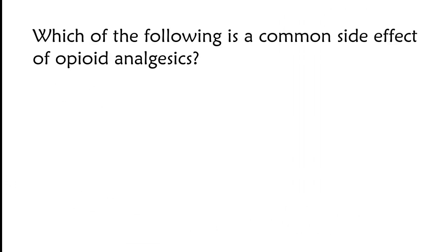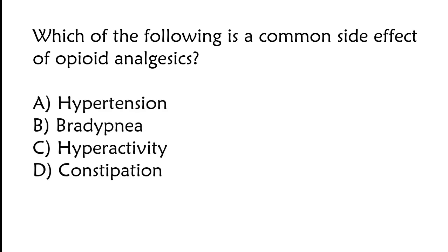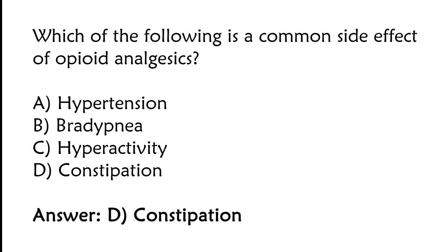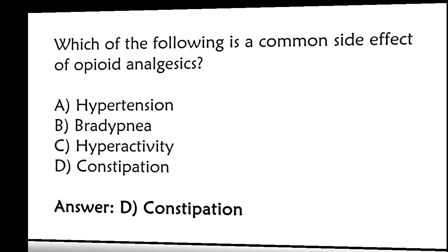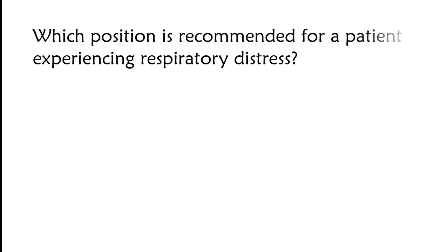Which of the following is a common side effect of opioid analgesics? Options: hypotension, bradypnea, hyperactivity, constipation. The correct answer is option D: constipation is a common side effect of opioid analgesics.